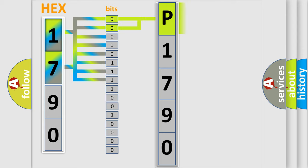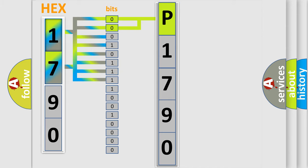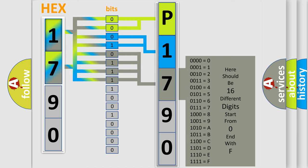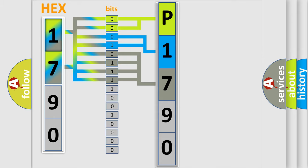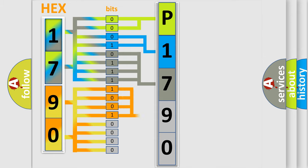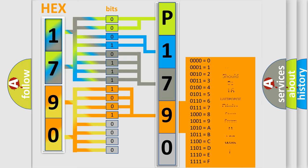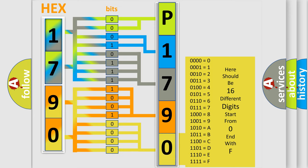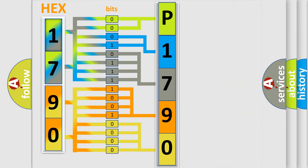By combining the first two bits, the basic character of the error code is expressed. The next two bits determine the second character. The last bits of the first byte define the third character of the code. The second byte is composed of a combination of eight bits. The first four bits determine the fourth character, and the combination of the last four bits defines the fifth character. A single byte conceals 256 possible combinations.